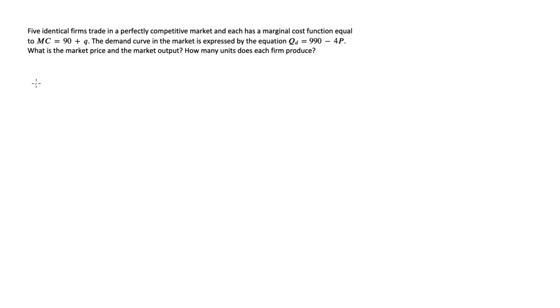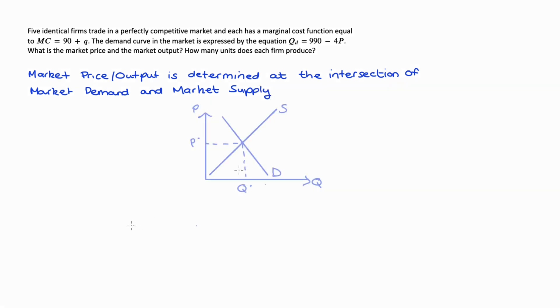Now to answer this question we just have to first recall that in perfect competition the market price and the market output is found at the intersection of our market demand and our market supply. So visually the diagram looks something like here on your screen, P* is the market price and Q* is the market output.